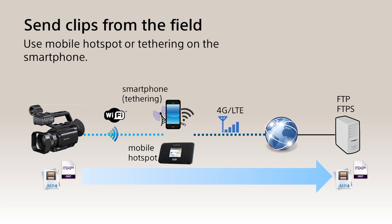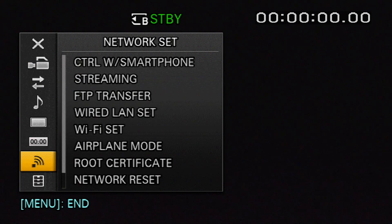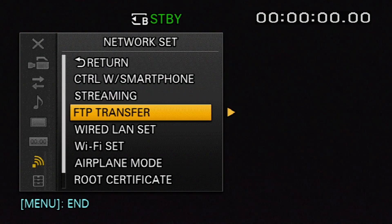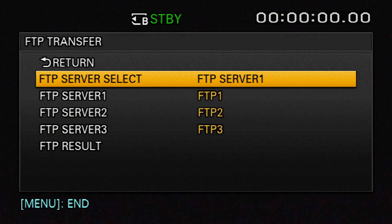This graphic shows how you connect the camera to send clips to a remote FTP server. The network connection on the camera side is identical to that of live streaming — you will need a mobile Wi-Fi router. It is possible to use FTP or Secure Transfer FTPS. For FTP file transfer, select FTP Transfer from the Network Set menu.